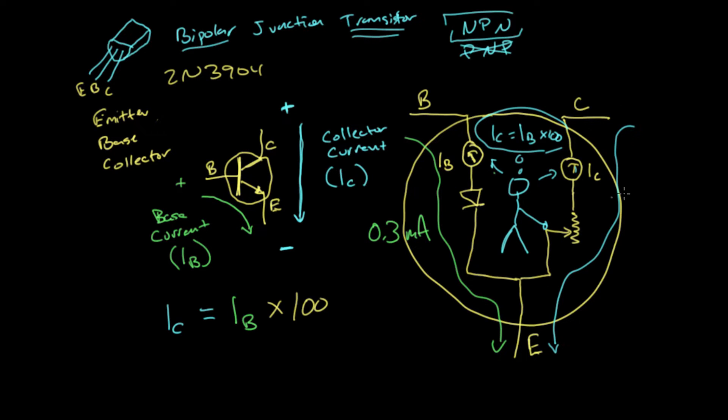He wants to make sure that the collector to emitter current is going to be 100 times that. So he's going to try and make that 30 milliamps. 100 times 0.3, and 30 milliamps is enough to turn on an LED.